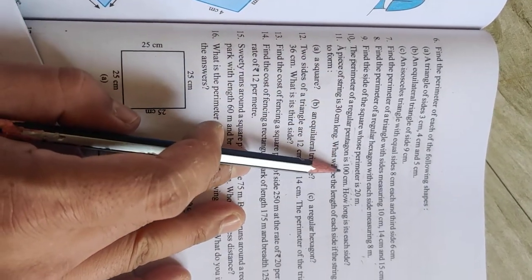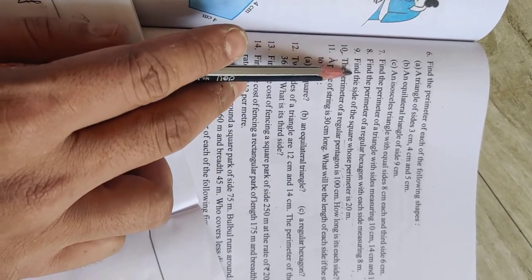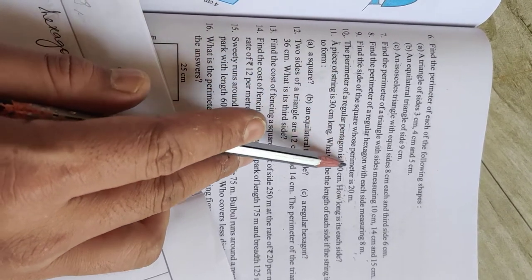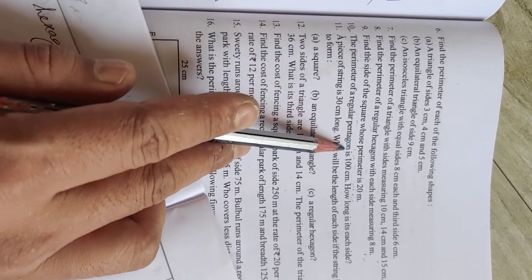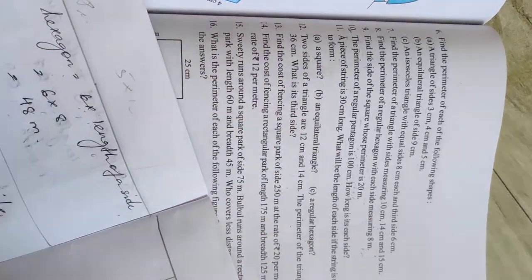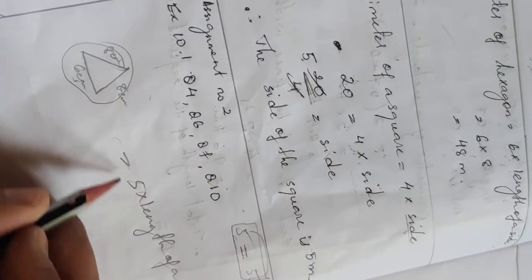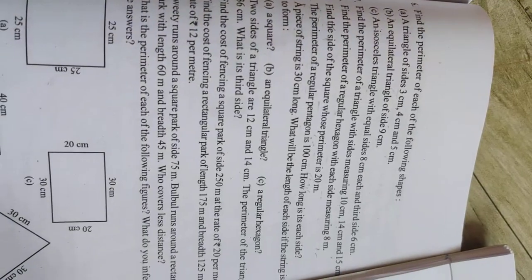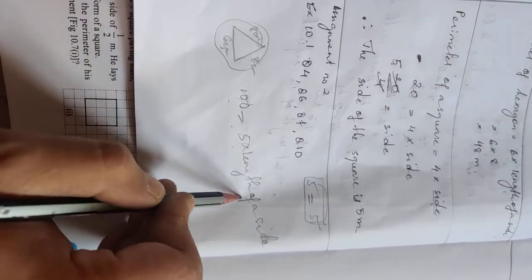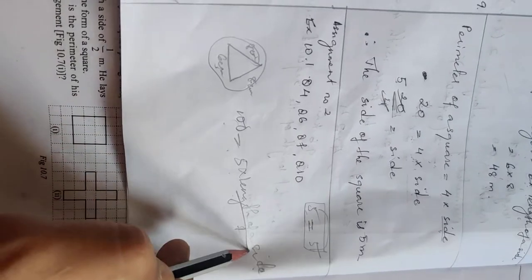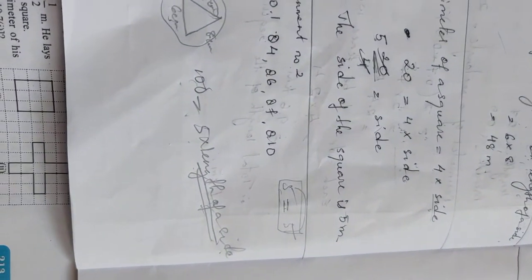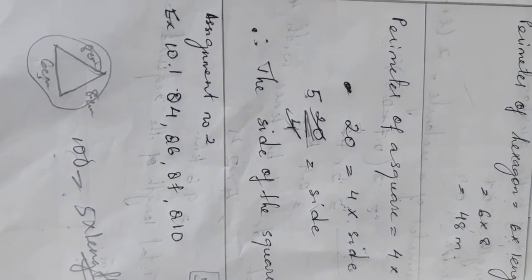Number ten: the perimeter of a regular pentagon is 100 centimeters. Just like question nine, the pentagon formula is 5 times the length of a side. So 100 is equal to 5 times the length of a side, and you have to find the length of a side. Your assignment is exercise 10.1: question number four, question number six, question number seven, and question number ten.